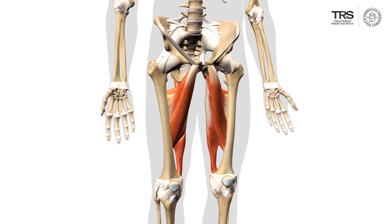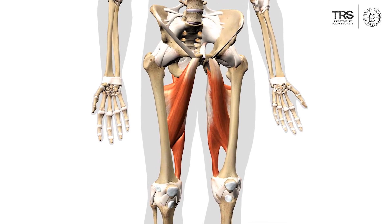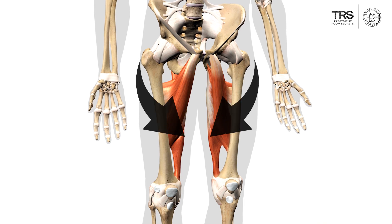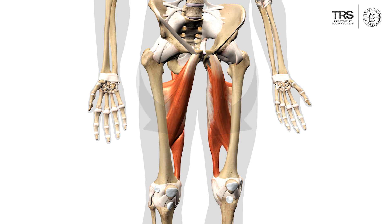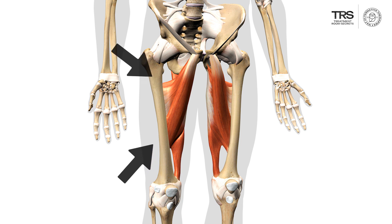We are now going to look at the adductor muscles of the thigh. 'Ad' means towards in Latin, so these are muscles that pull towards. There's the long and the short of it: there's the adductor longus, which is here, and then there's the adductor brevis, which is there — that's the long adductor and the short adductor.